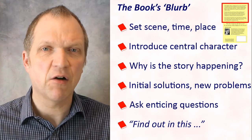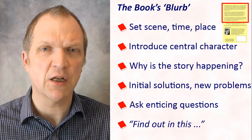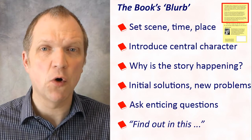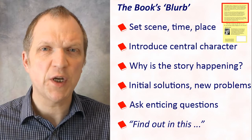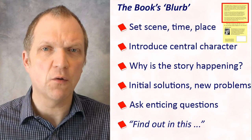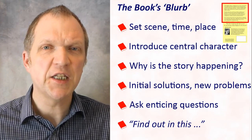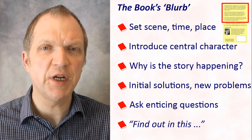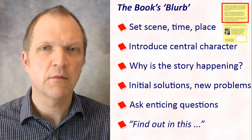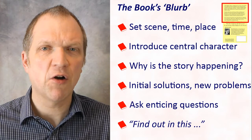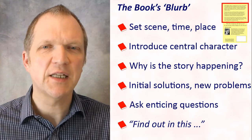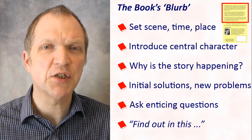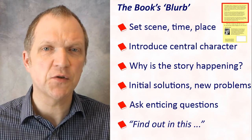The second paragraph hints at what the central character does to solve the initial challenge, and how this leads to more problems. The third paragraph asks questions about how the story will unfold — hopefully echoing what the person reading the blurb is thinking. It typically ends with a find-out-in-this dot-dot-dot sentence that can indirectly describe the book's genre or type of story.